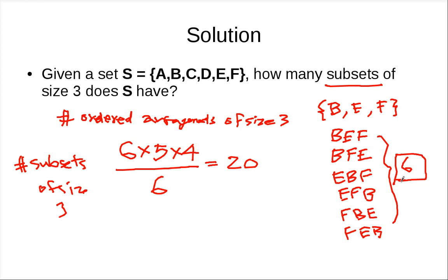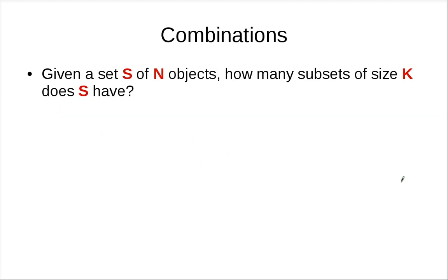And you know what this six is from, right? So let me look at a really general example. Given a set of N objects, how many subsets of size K does S have? So instead of having the actual set, we have some set of N objects—you can think of this as 1 to N—and you want to pick K of them.